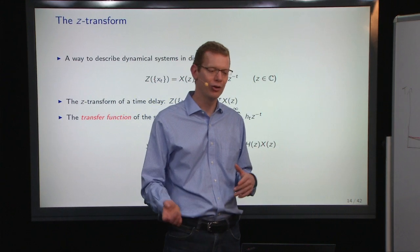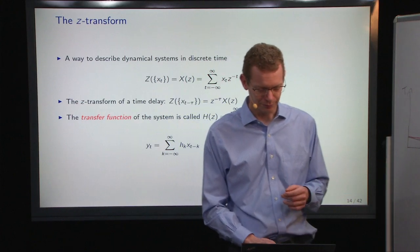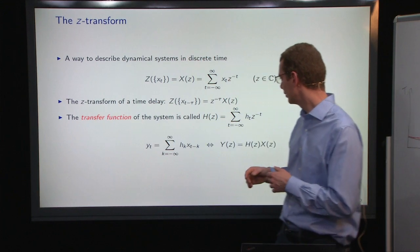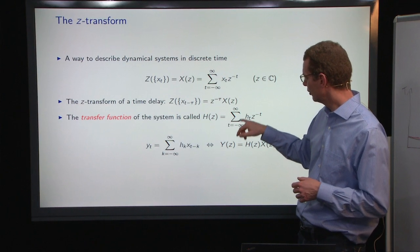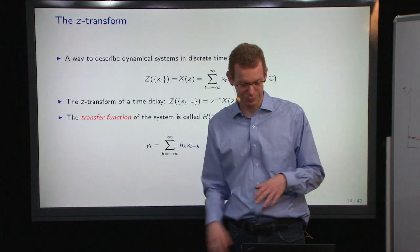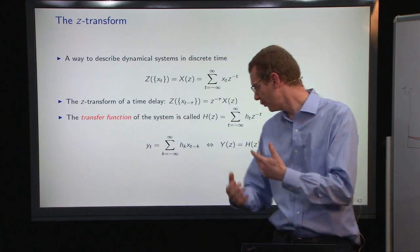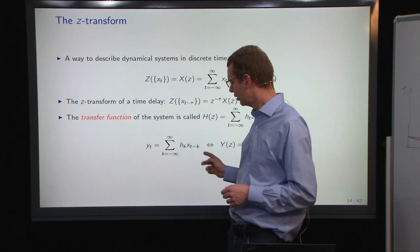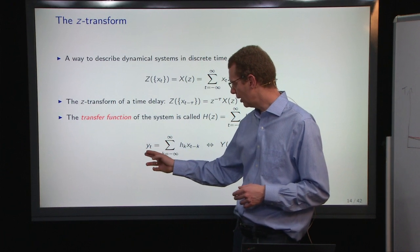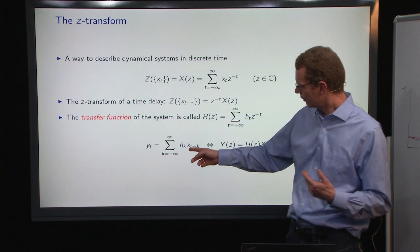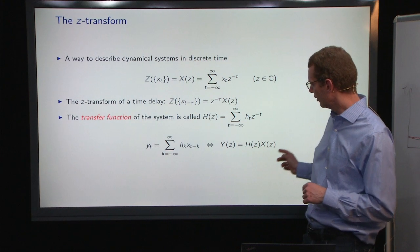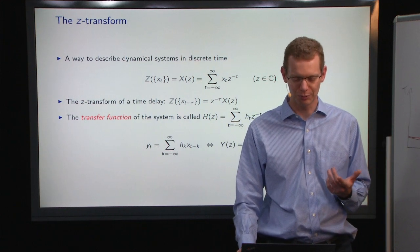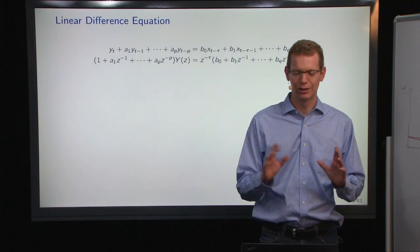Remember how you checked for stability in the first or second assignment. When we are in the Z-domain, the impulse response H — when we do the Z-transform of that — we call it the transfer function: what you transfer from your input through your system to get your output. In the time domain you have an infinite sum: Y(T) equals the infinite sum of H(K) times X(T minus K). That is equal to a product in the Z-domain, so you can get rid of infinite sums and just consider products.